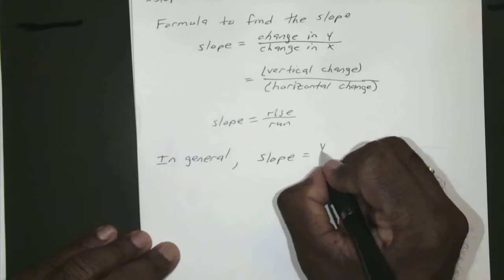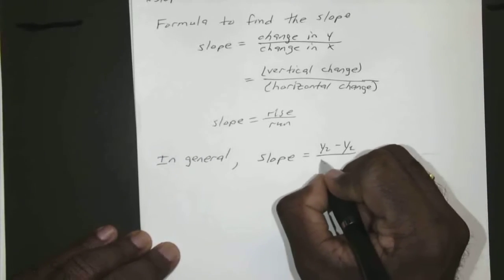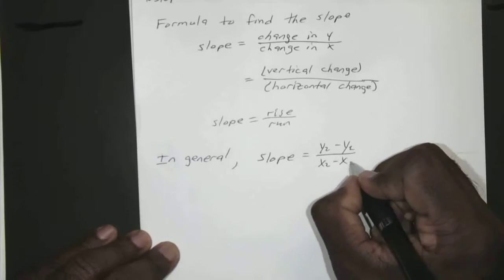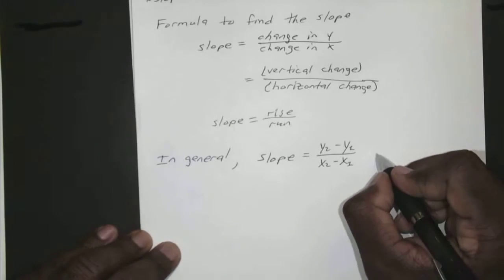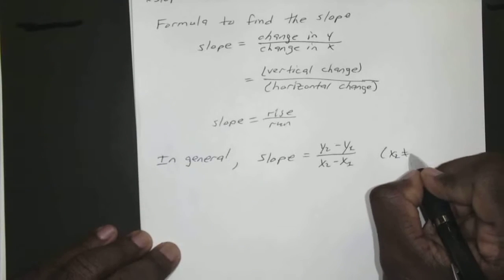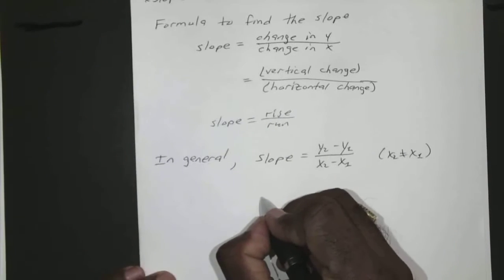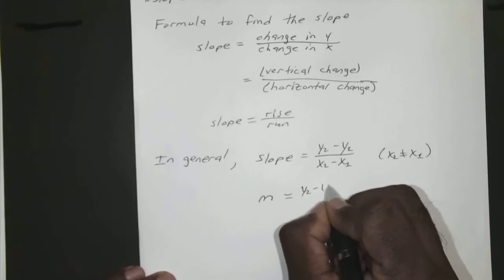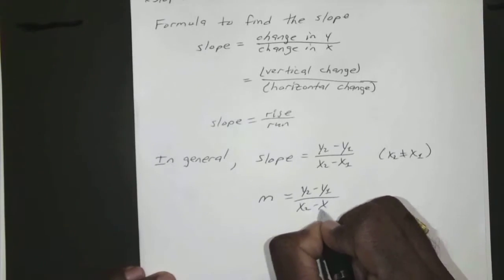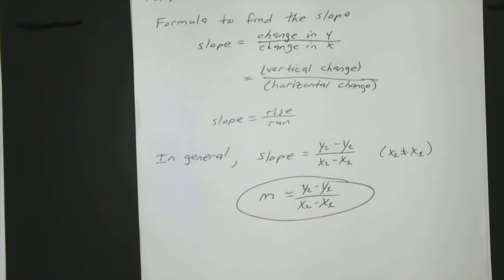So in general the slope is equal to y2 minus y1 over x2 minus x1, where we know that x2 does not equal x1 because then you'd have a denominator of zero, we all know that would destroy the planet. Or m is equal to y2 minus y1 over x2 minus x1. It's just your general formula that outside of all that other stuff is really all you have to remember.